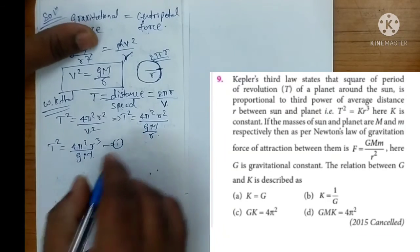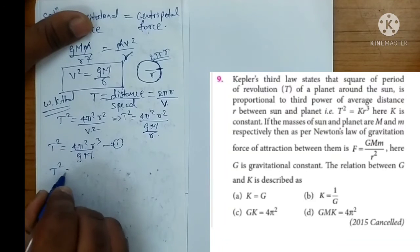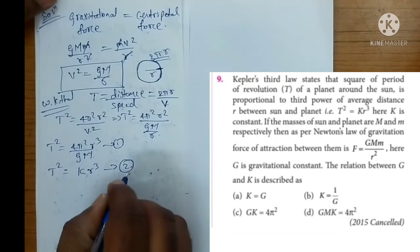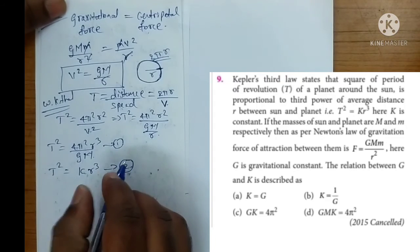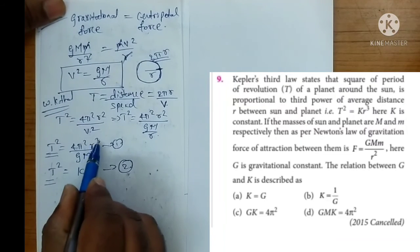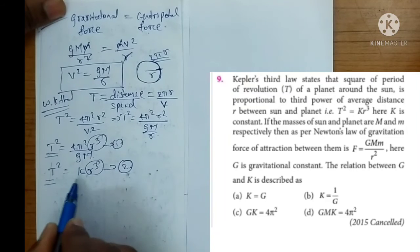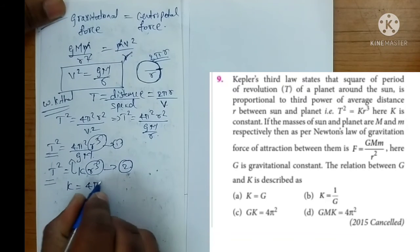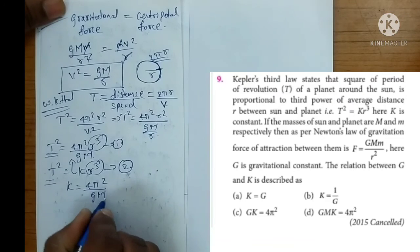Question me kya diya hai? T² = k × r³ given in the question. Now, compare equation one and two. Here T², here also T². Here r³, here also r³. So k's value is what? So k's value is 4π²/GM.